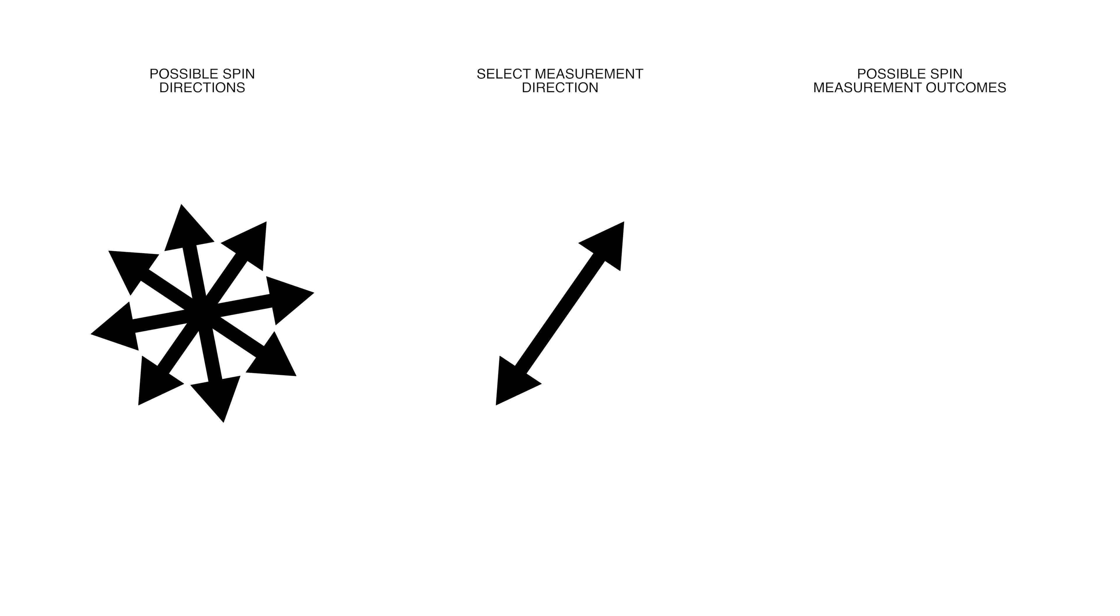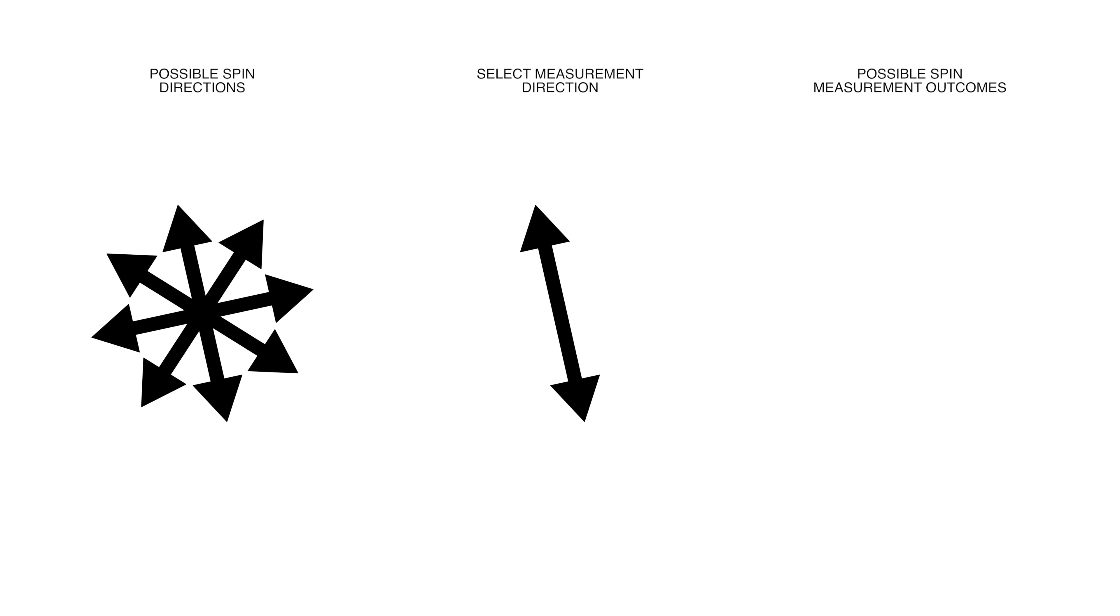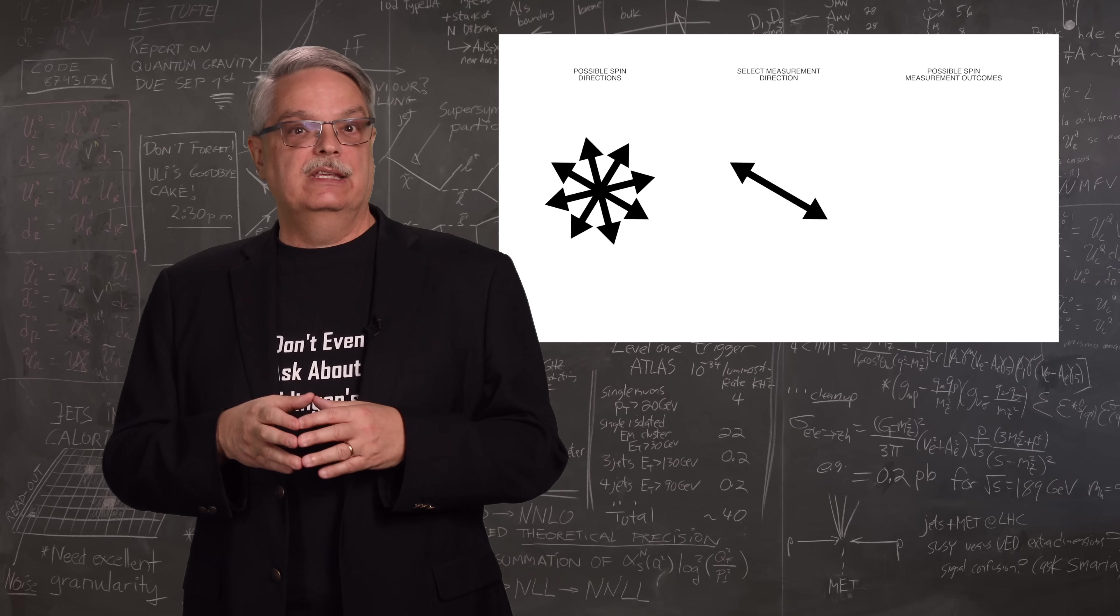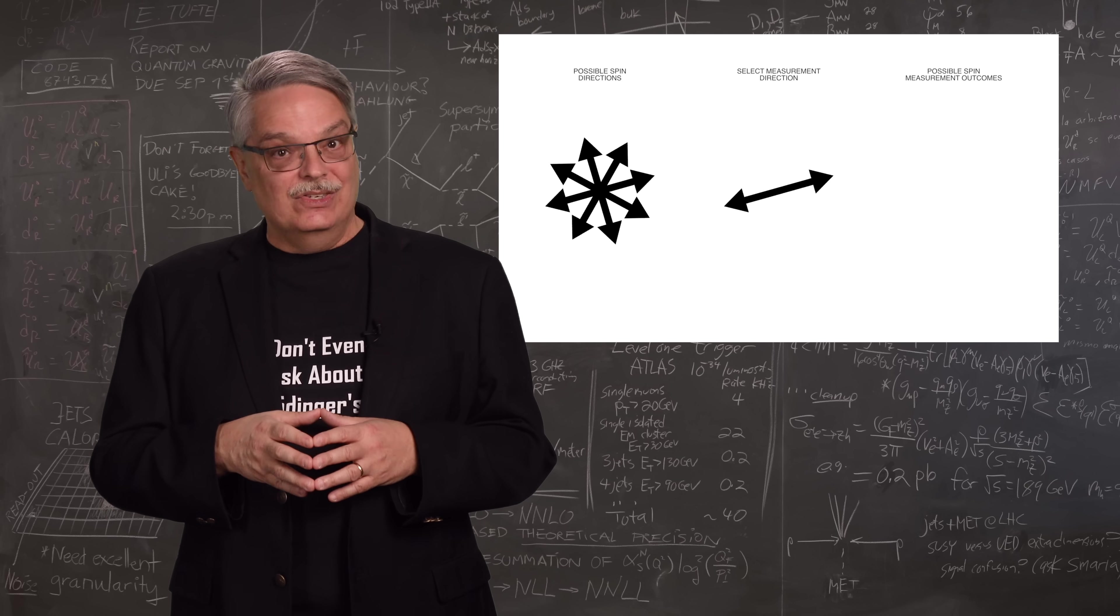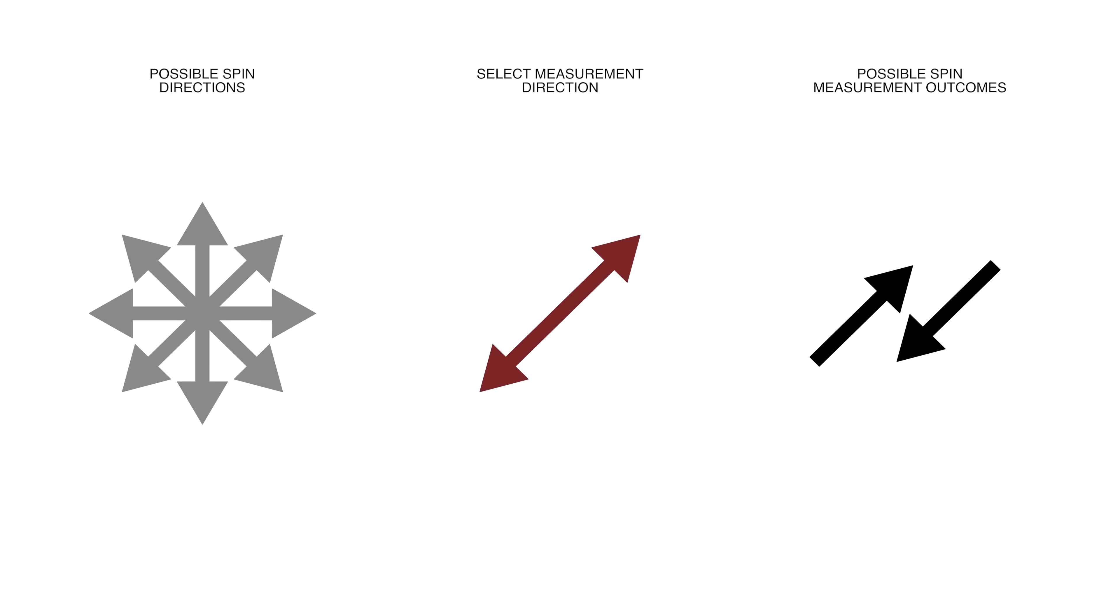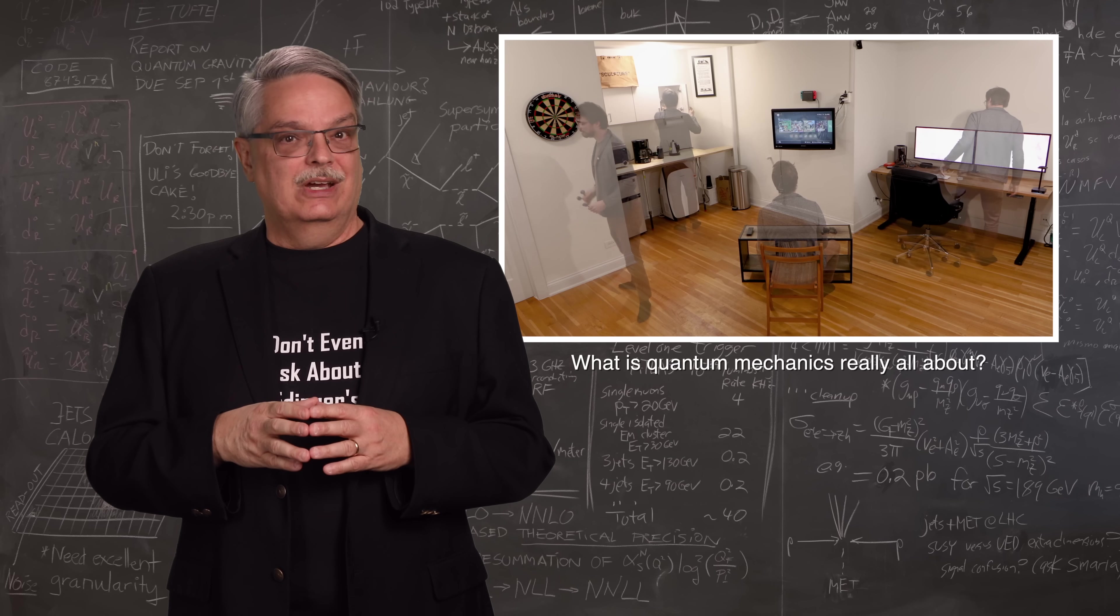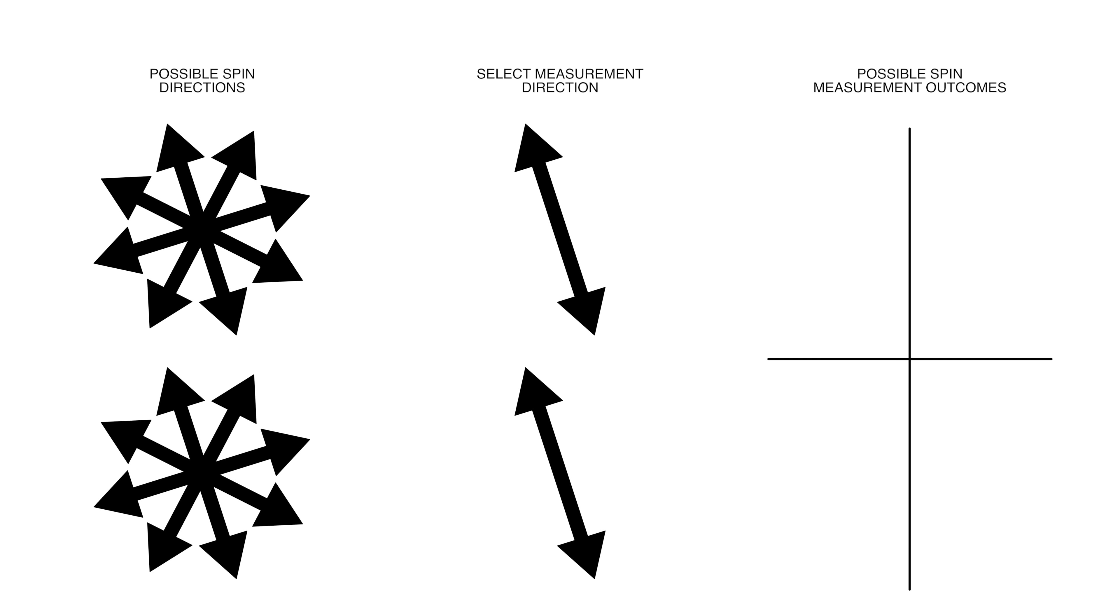Prior to the measurement, the wave function might say that the spin axis of the particle could be in any direction. Indeed, the most popular understanding of quantum mechanics says that the spin direction actually is in all directions allowed by the wave function. It's only when you make a measurement that the wave function collapses and the outcome becomes real. If you'd like some more information on wave functions and how they collapse, that other video might help.